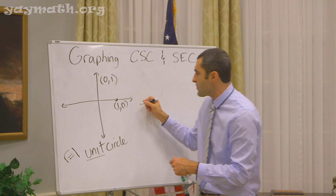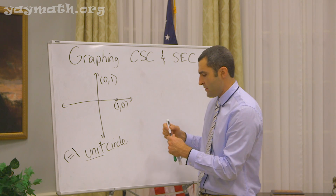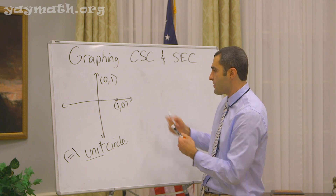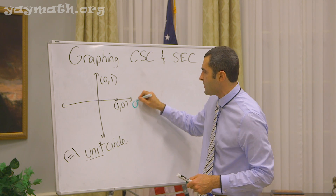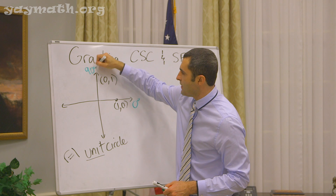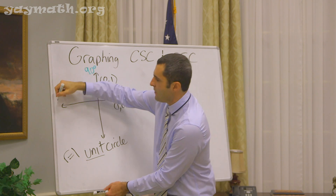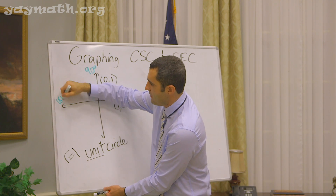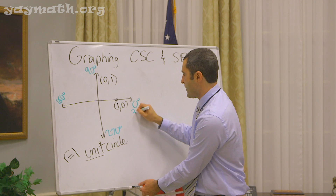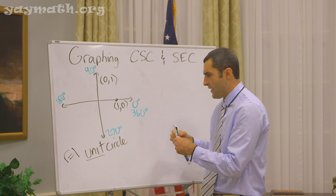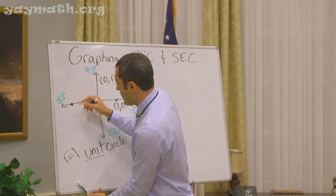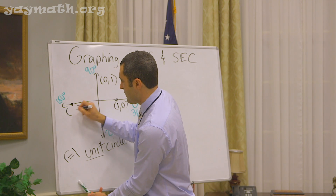Now let's do some angles — in degrees and radians. Let's start with degrees. Zero degrees. Keep going. 90. Keep going. 180. 270. Keep going. And then 360. I didn't put all the points — let's put the points. Negative one, zero.